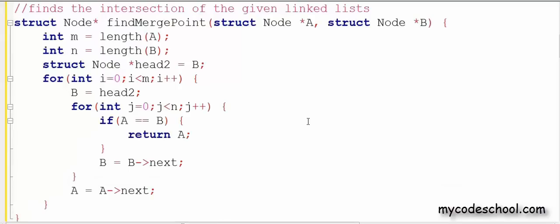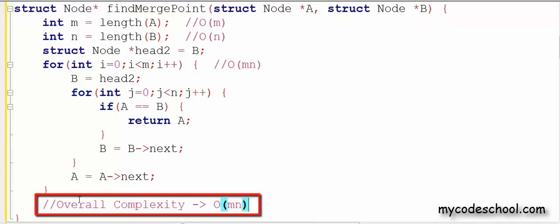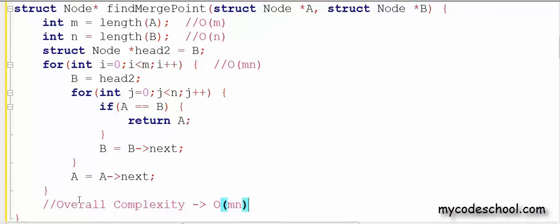So what would be the time complexity of this approach? It would take O(m) time to find the length of A. Similarly O(n) time to find the length of B. And then this nested for loop would take O(m*n) time. Therefore, the overall complexity would be O(m*n). You can refer to the video description to find our lessons to learn how to find time complexity of algorithms.